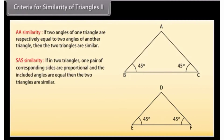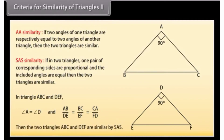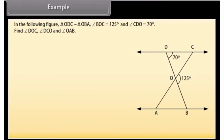SAS Similarity: If in two triangles one pair of corresponding sides are proportional and the included angles are equal, then the two triangles are similar. In triangles ABC and DEF, if angle A = angle D and AB/DE = BC/EF = CA/FD, then triangles ABC and DEF are similar by SAS similarity.